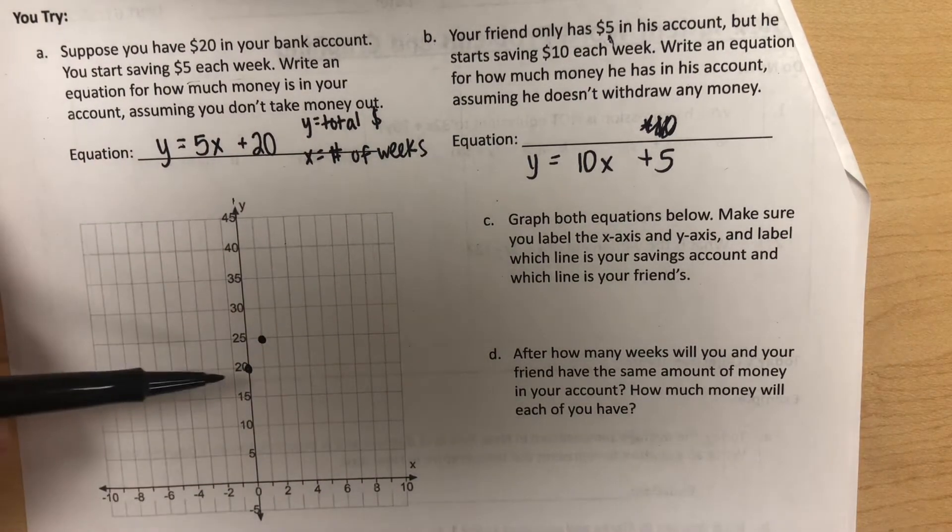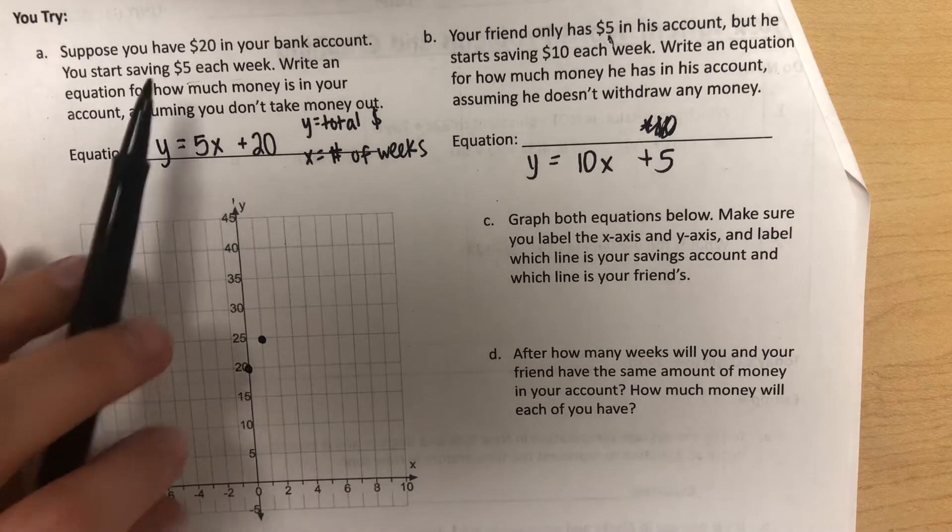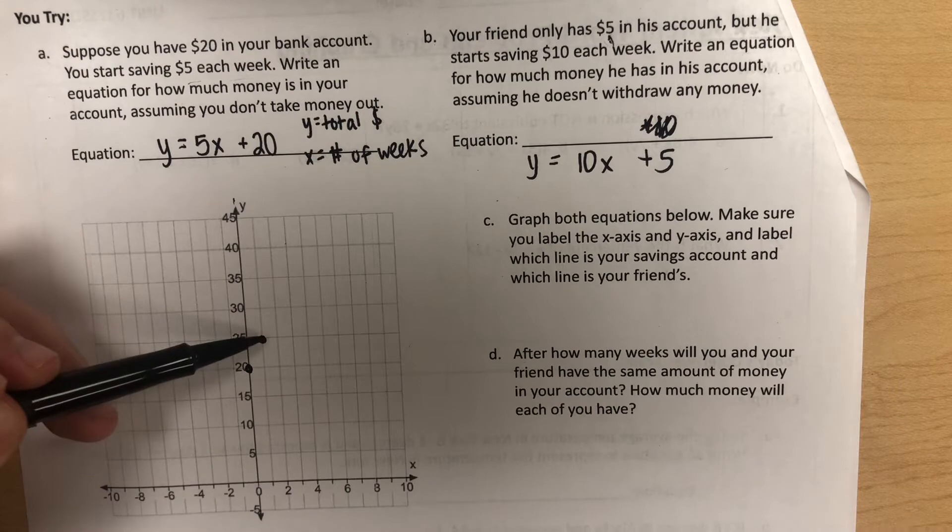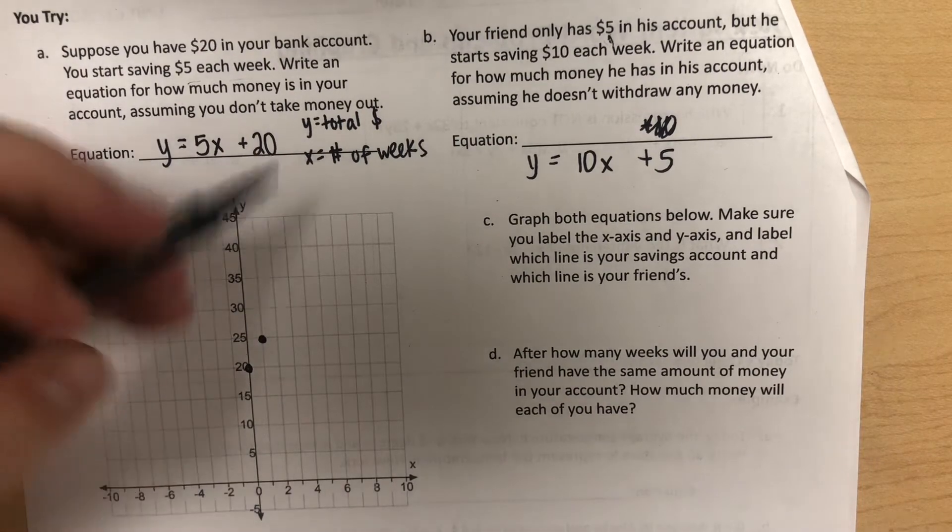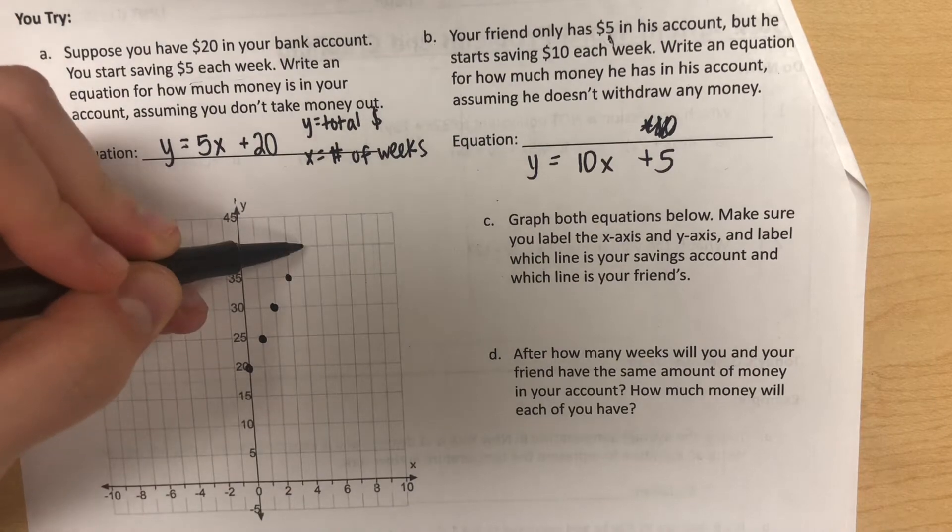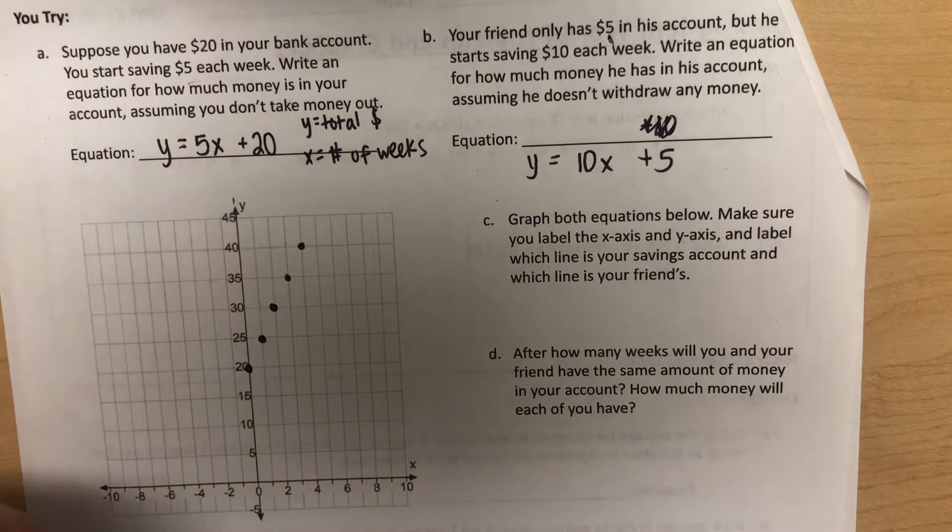As Niall was graphing this, he was saying, I'm starting with $20, and then if I'm saving $5 each week, by week 1 I have $25. By week 2, $30. Week 3, $35. And you can think of it that way too.